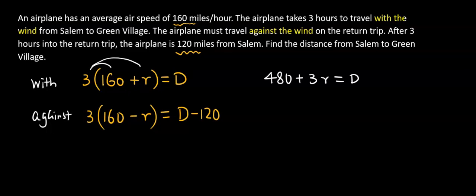And the next one, distribute. We're going to have 480 minus 3r equals d minus 120. Let's add 120 each side. Add 120, add 120. And so this one I have 600 minus 3r equals d.